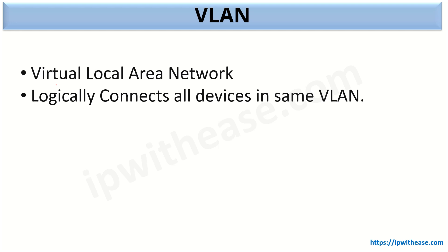VLAN, which is an abbreviation for virtual local area network, allows a switch to connect all the devices which are part of the same VLAN. This VLAN will not talk to other VLANs which are part of the same switch. VLAN to VLAN communication is not possible on a layer 2 switch, while within the same VLAN it is possible.